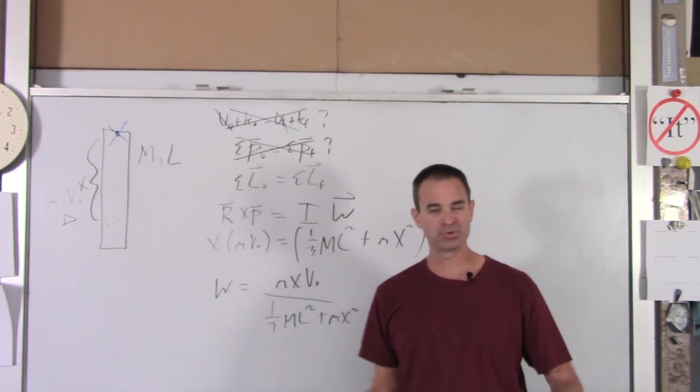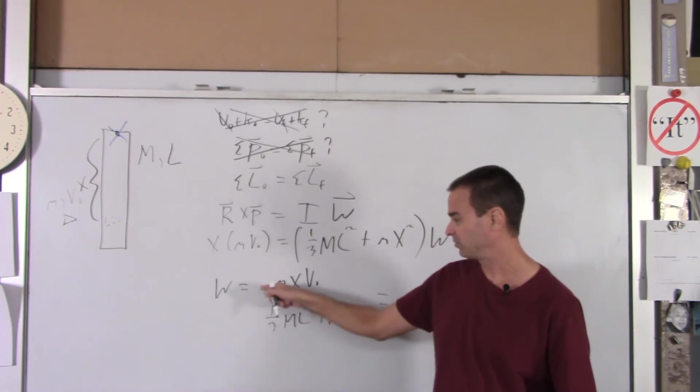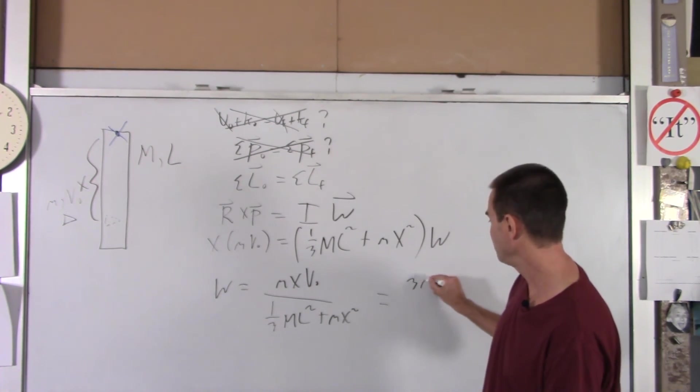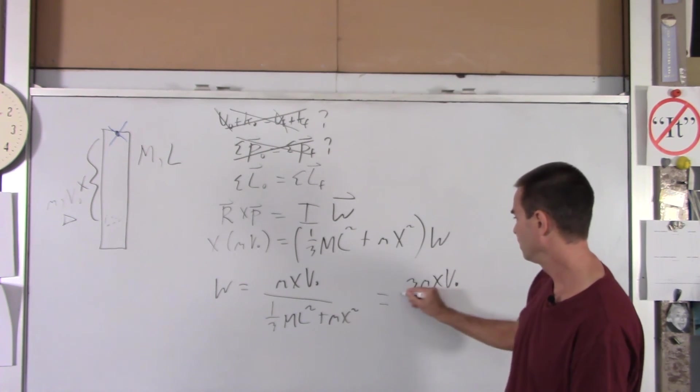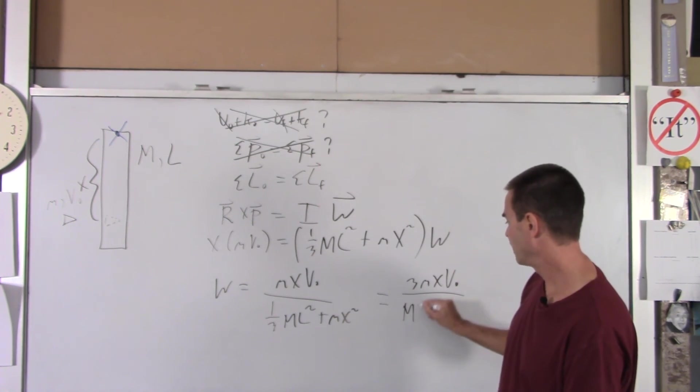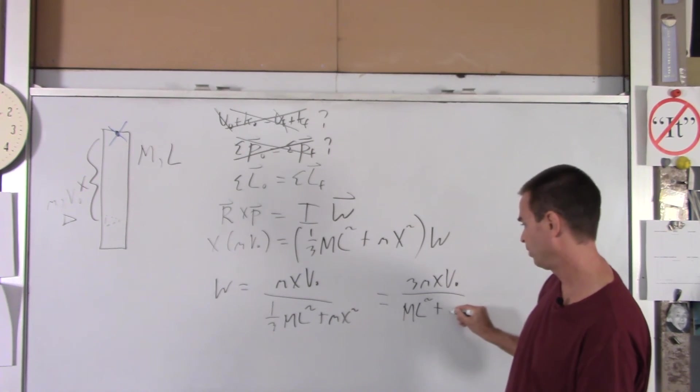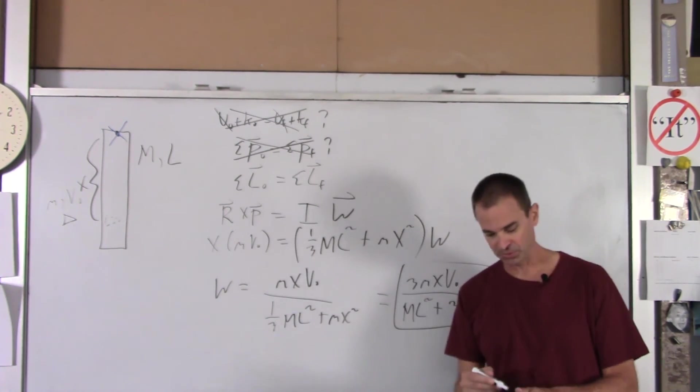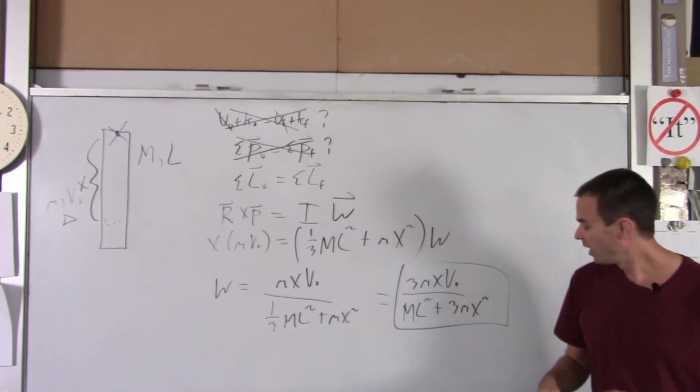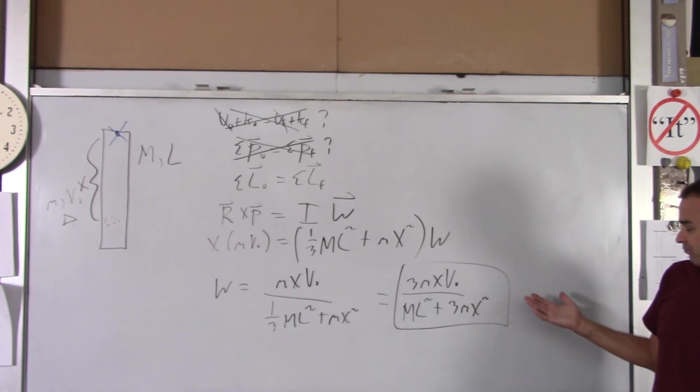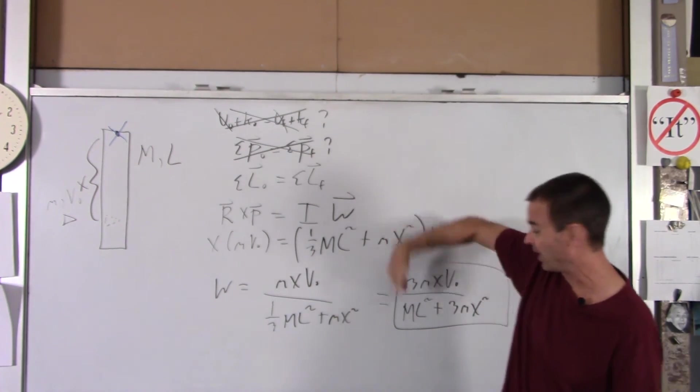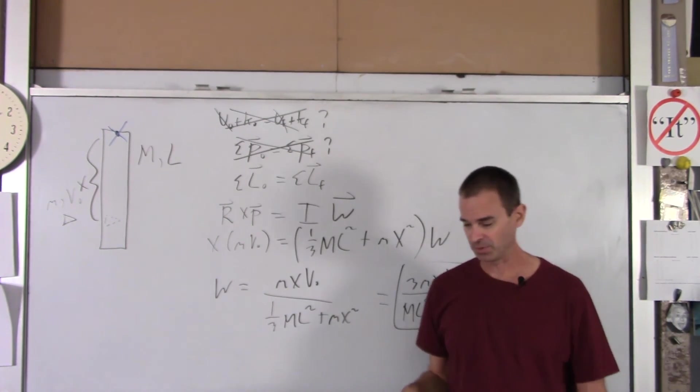If this were like a multiple choice test, we typically don't like fractions and fractions. So I'd multiply every term in there by 3, and you'd end up with 3m x V0 over big M L squared plus 3m x squared. So that would be like on a multiple choice test, what you'd see is the answer choice. Having said all that, you can't use conservation of energy or linear momentum to get this answer. You've got to use conservation of angular momentum.